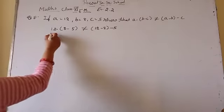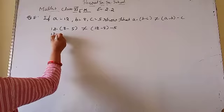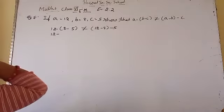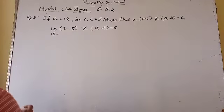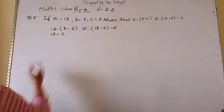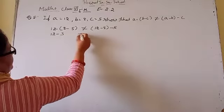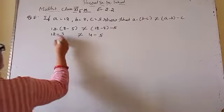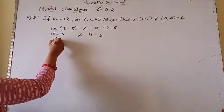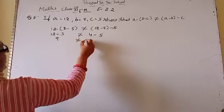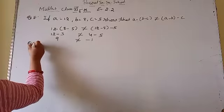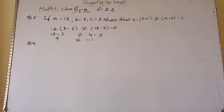आप देखिए — LHS में 12 minus (8 minus 5): पहले 8 में से 5 गया, बचे 3, फिर 12 minus 3 = 9. RHS में (12 minus 8) minus 5: 12 में से 8 गया 4, फिर 4 minus 5 = minus 1. तो दोनों तरफ answer equal नहीं आ रहा। बस यही show करना था। Question number 9.